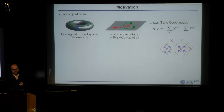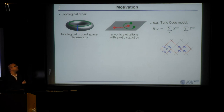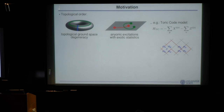The absence of local order parameters manifests itself in a topological degeneracy of the ground space, where the degeneracy depends on global properties of the surface on which the system is placed. In particular, there are exotic excitations which can only be created pairwise, with fermionic or more exotic statistics when moved around each other. Throughout the talk, I will use the toric code model as an example because it is simple and illustrates most of the essential ideas.